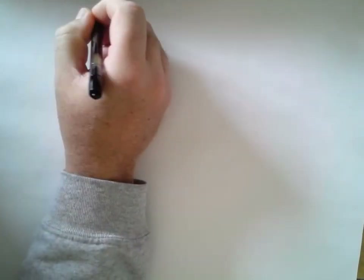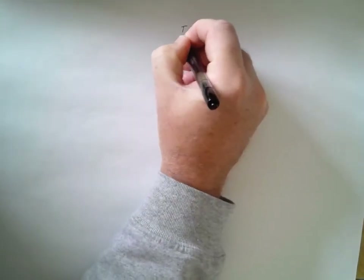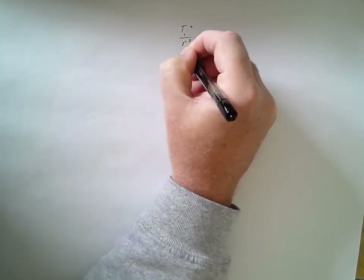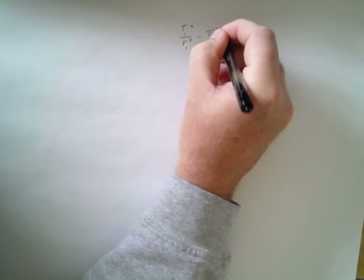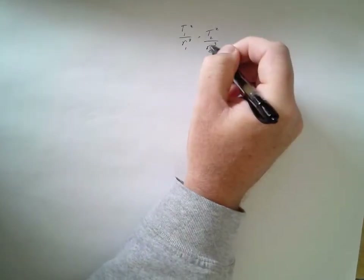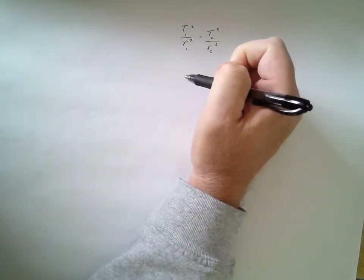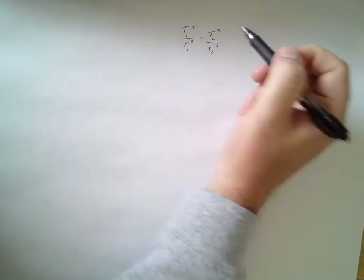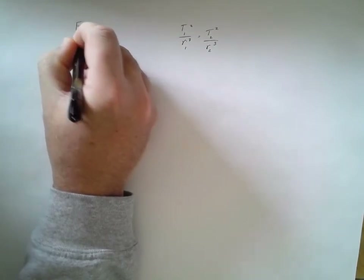We're talking about Kepler's Third Law and the Universal Law of Gravitation. Kepler's Third Law states that T1 squared over r1 cubed equals T2 squared over r2 cubed — these two ratios are equal to each other. We're also going to combine this with the force of gravity.